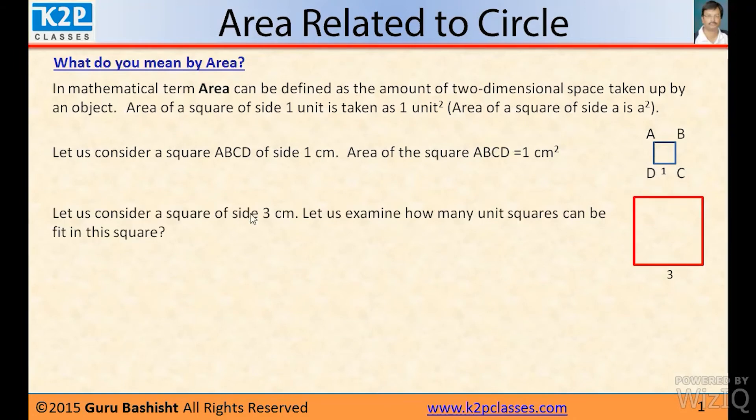Let us consider a square of side 3 cm. Let us examine how many unit squares can be fit in this square - how many of these small squares can be fit in this particular square.